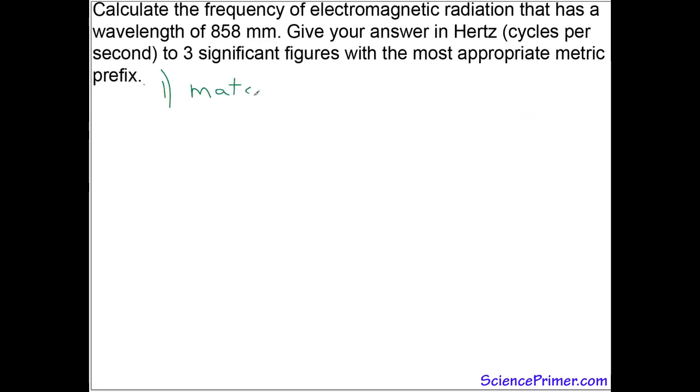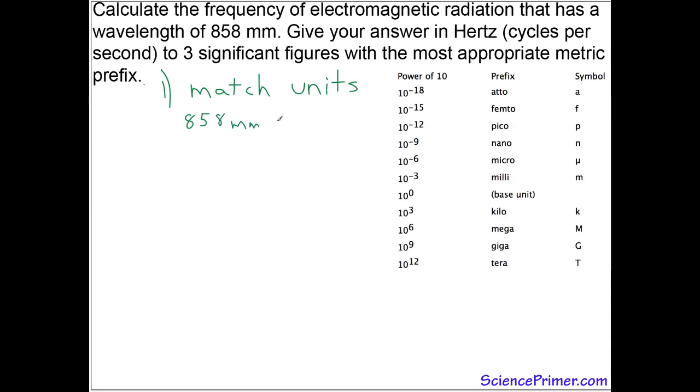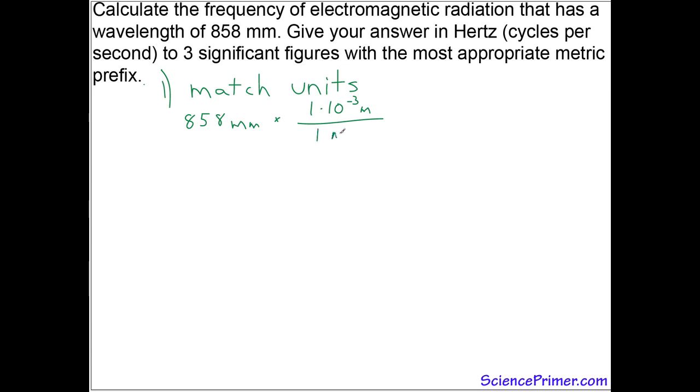Step one, match units. Starting with 858 millimeters, pull in a metric prefix table and see that a millimeter is equal to ten to the minus three meters. Using this information, we can convert the units quite simply by taking 858 millimeters and multiplying it by one times ten to the minus three meters over one millimeter.